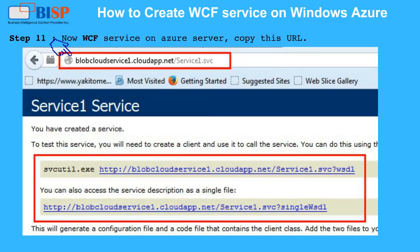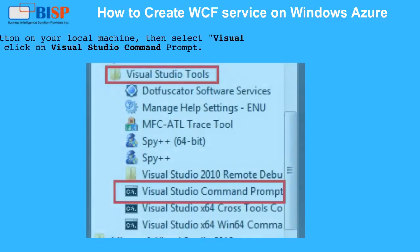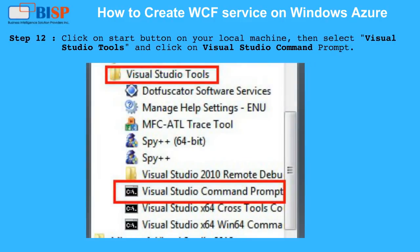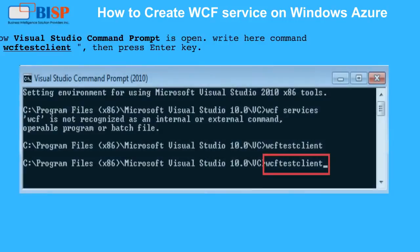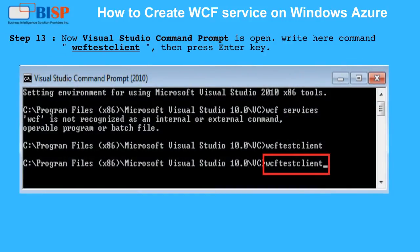Copy this URL. Step 12: Click on the Start button on your local machine, then select Visual Studio Tools and click on Visual Studio Command Prompt. Step 13: Now the Visual Studio Command Prompt is open. Type the command WCF Test Client, then press the Enter key.